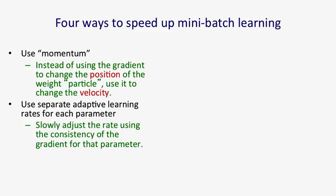A second method for speeding up mini-batch learning is to use a separate adaptive learning rate for each parameter, and then to slowly adjust that learning rate based on empirical measurements. And the obvious empirical measurement is, are we keeping making progress by changing the weights in the same direction? Or does the gradient keep oscillating around so that the sign of the gradient keeps changing? If the sign of the gradient keeps changing, what we're going to do is reduce the learning rate. And if it keeps staying the same, we're going to increase the learning rate.